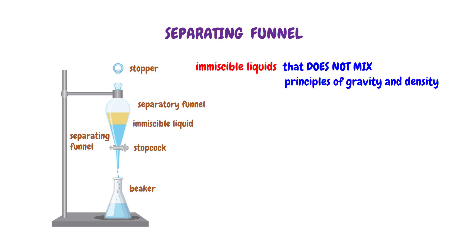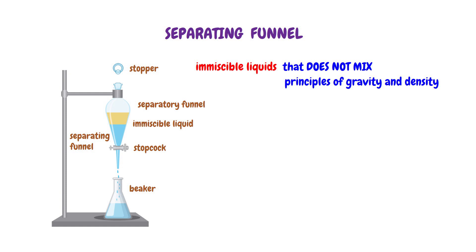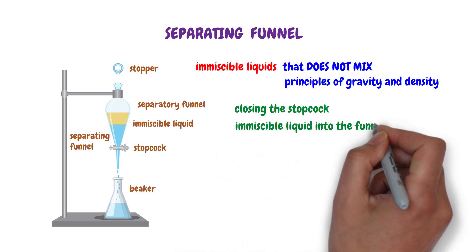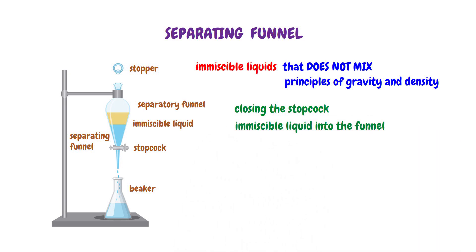To employ the separating funnel technique, begin by closing the stopcock of the funnel. Carefully pour the immiscible liquid into the funnel and seal it with a stopper. Allow the fluid to settle. The denser liquid will gravitate to the bottom while the less dense counterpart will remain atop.